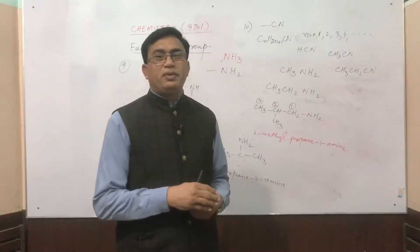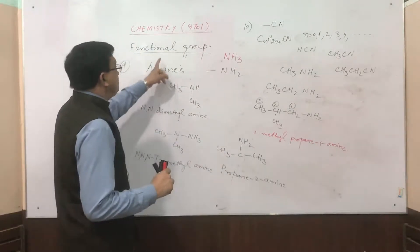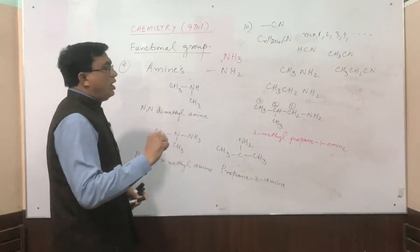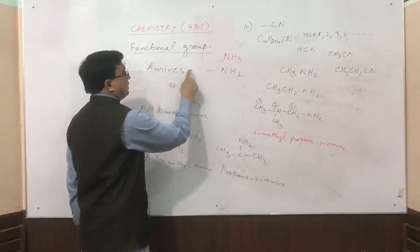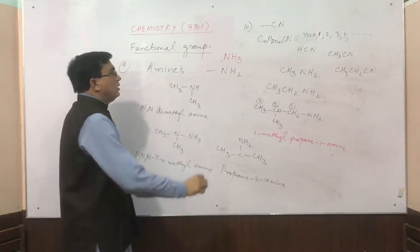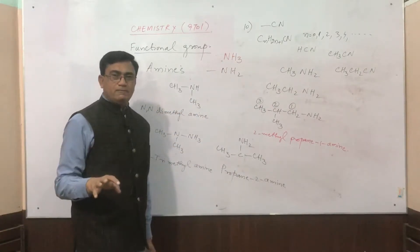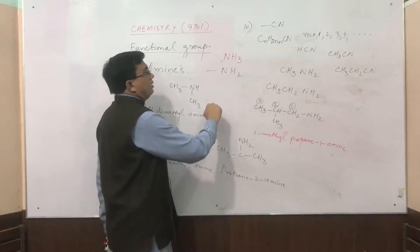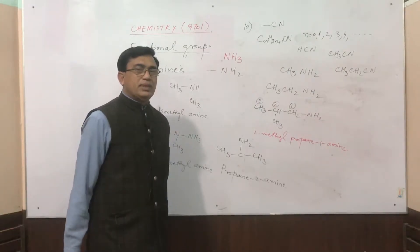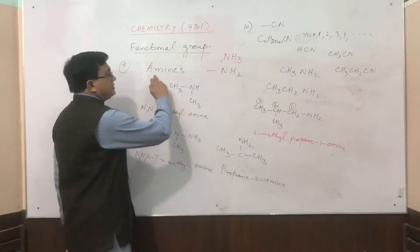In the continuation of our previous lectures, we were discussing AS level chemistry functional groups. The next functional groups left over are amines and the last one is nitrile. In the case of amines, this is the simplest formula of ammonia. When a hydrogen atom of ammonia is replaced by a carbon atom, the resulting compounds are called amines.